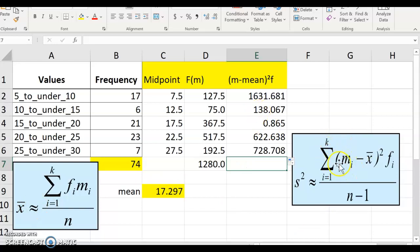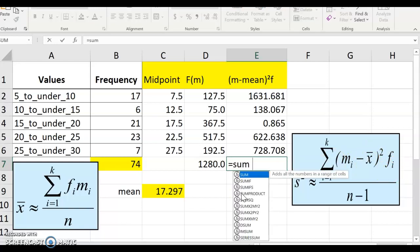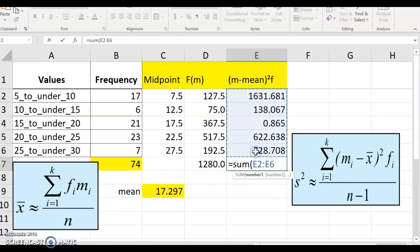We have done the sum of the midpoint minus the mean square times the frequency. We have to sum this up. So sum this column up. So now we have that number.